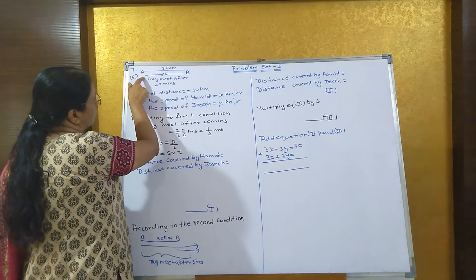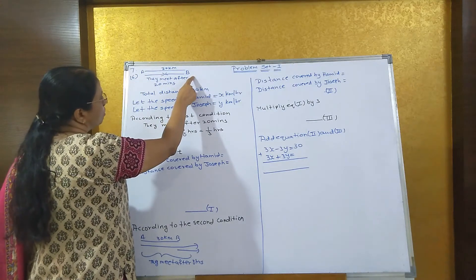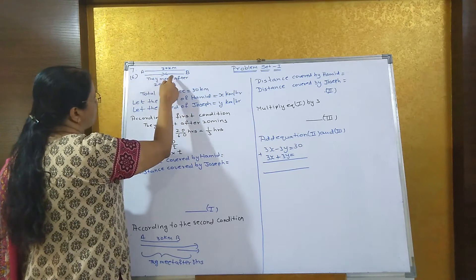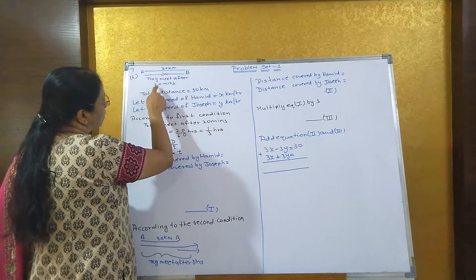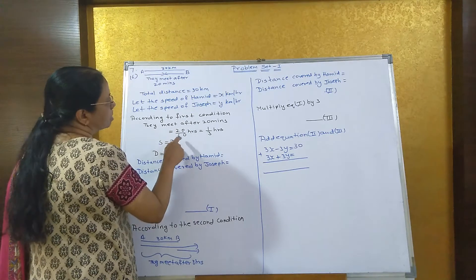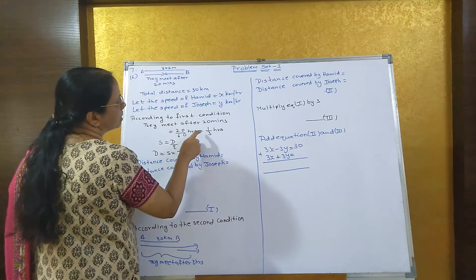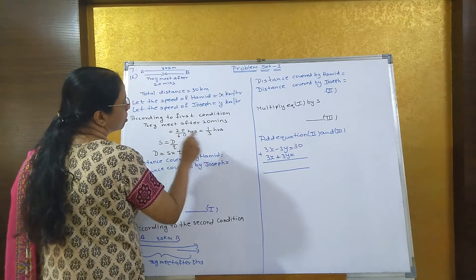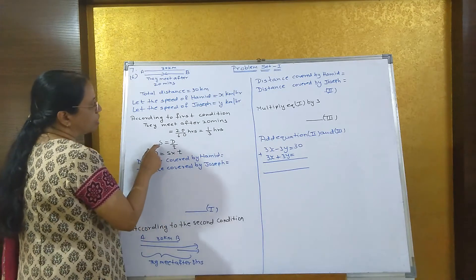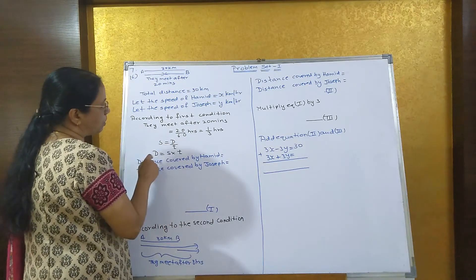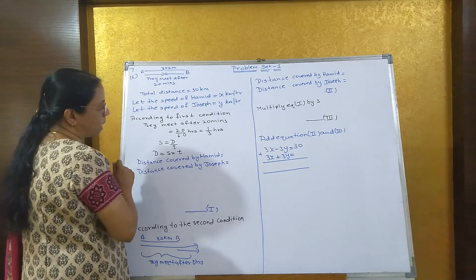Hamid goes from position A and Joseph goes from position B in the opposite direction and they both meet after 20 minutes. Convert 20 minutes into hours, that is 20 upon 60, equal to 1 upon 3 hours. We know that speed equals distance upon time, so distance equals speed into time.